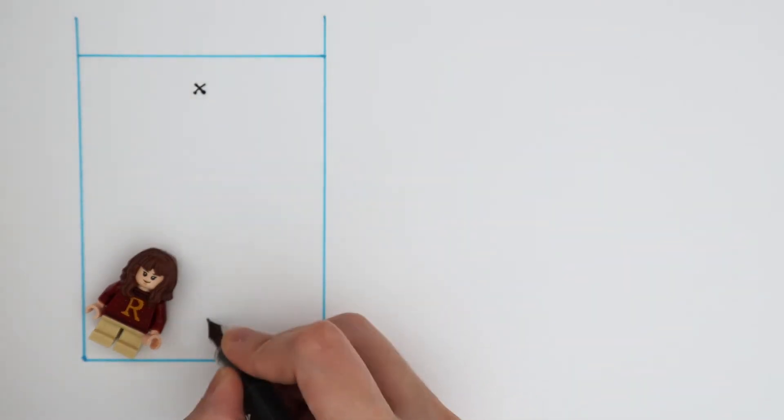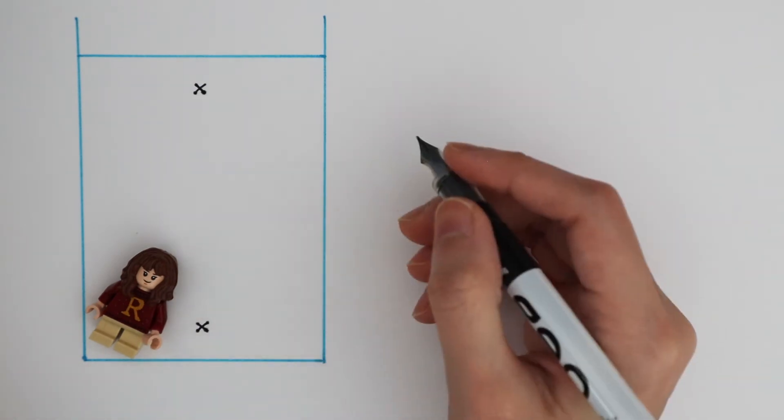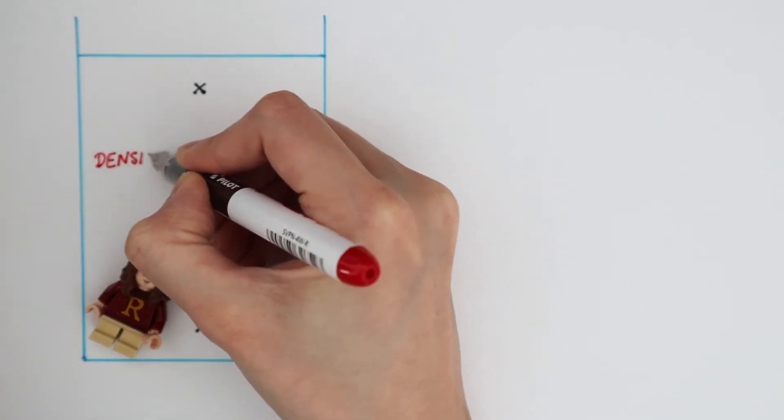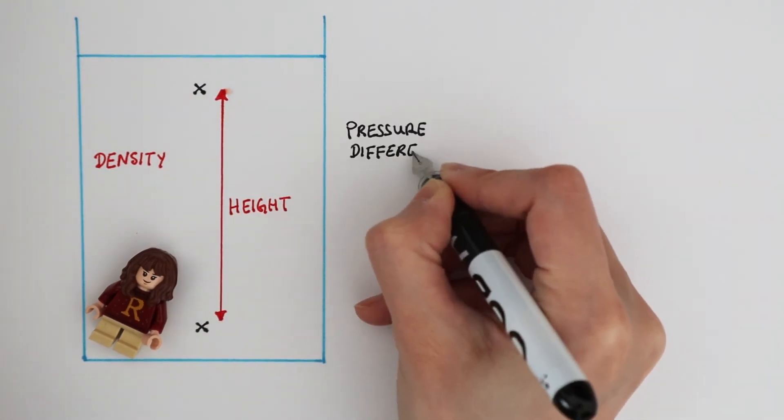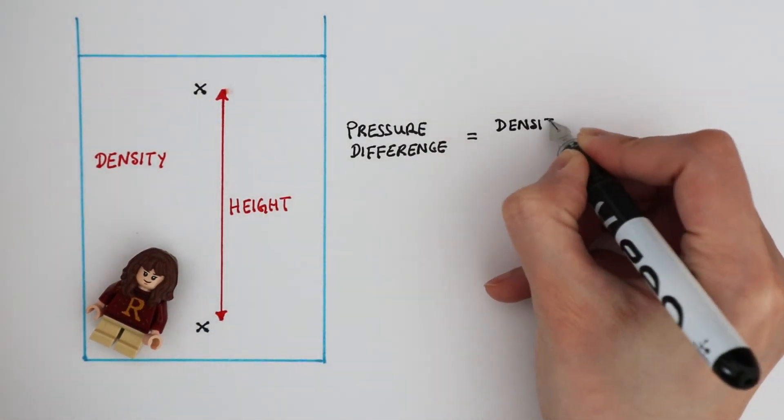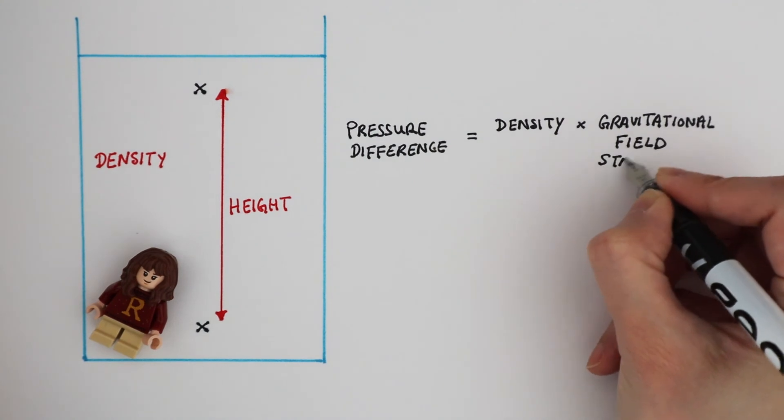We can calculate the pressure difference between these two points if we know the density of this liquid and the height. Pressure difference is given by density times gravitational field strength times height.